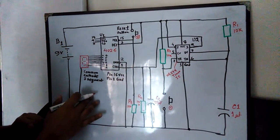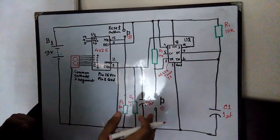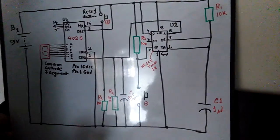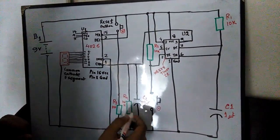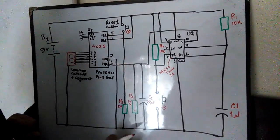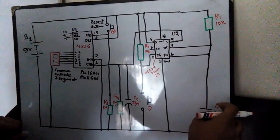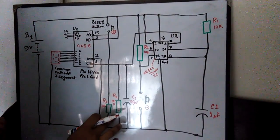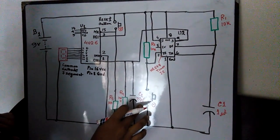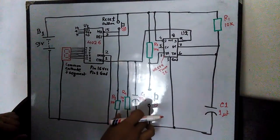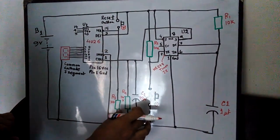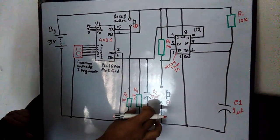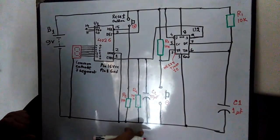IC 4026's 7-segment display connections: pin 4 is display enable out and pin 5 is carry out. Pin 15's carry out connects via 2 cables. Pin 15's carry out cable enables the next stage, and pin 14's carry out cable enables the following stage. A 22µF capacitor is used in the RC circuit.